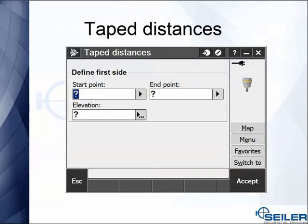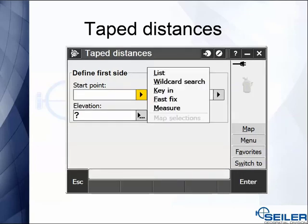When you bring up the COGO command for tape distances, it asks you for three things: a starting point, ending point, and the elevation. For the starting point, you can pick from the list of previously stored points, key in a new point, or you can do a fast fix or measure to measure points as you're doing this COGO command. Same is available for the end point.